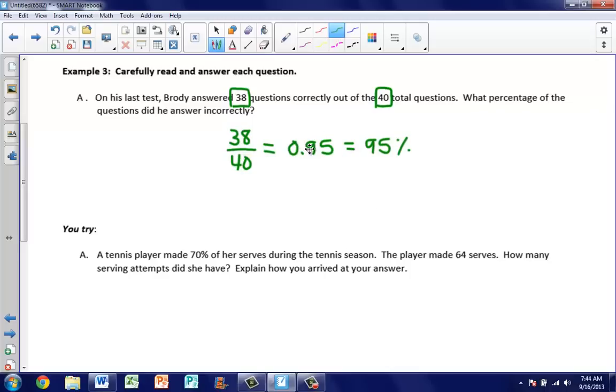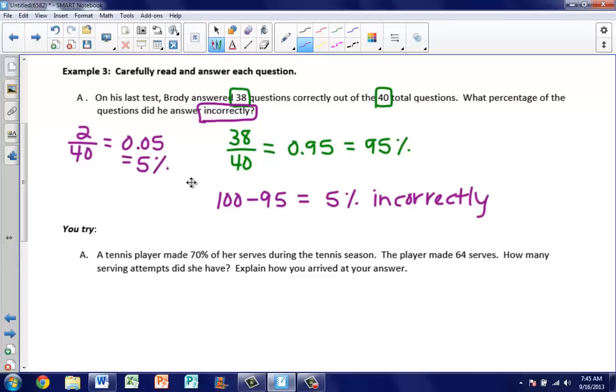To change a decimal to a percent, we move the opposite way, two spaces to the right. But be careful because the question is asking how many did he answer incorrectly? We know if there's a total of 100% and you got a 95% correct, we can just take 100 minus 95 to tell us that Brody answered 5% of the questions incorrectly. Another way you could have done this, if you wanted to skip your first step, you could have just said, if you got 38 correct, that means you only missed two. So we could take two divided by 40 and this would give us 0.05, which we would know is 5%. So you have two different ways of doing this problem. Both ways get you the correct answer.